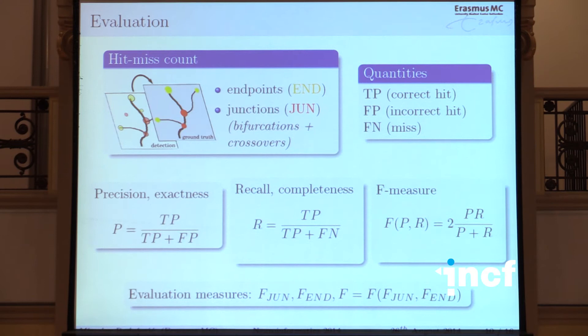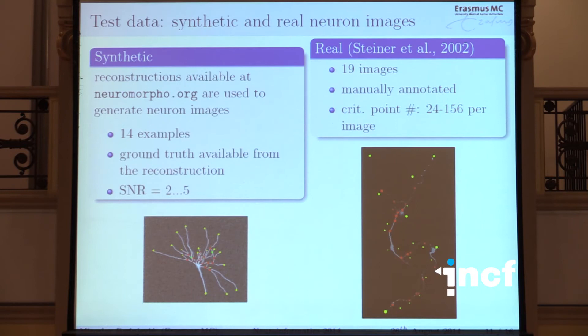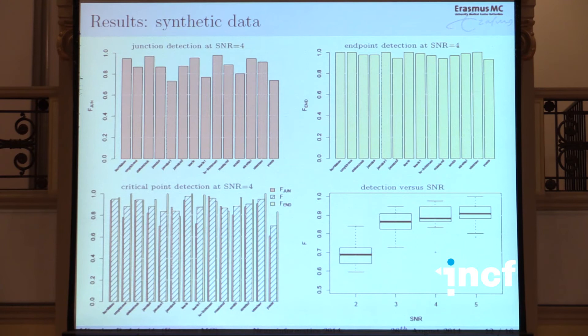For evaluation, we use a hit-or-miss approach: we have ground truth and count true positives, false positives, and false negatives, from which we compute precision, recall, and F-measure for each image, then summarize in three measures: F-score for junctions, F-score for endpoints, and a combined F-score. The datasets include synthetic neurons from the neuromorpho.org database at different signal-to-noise ratios, and 19 real light microscopy images manually annotated with varying numbers of critical points per image.